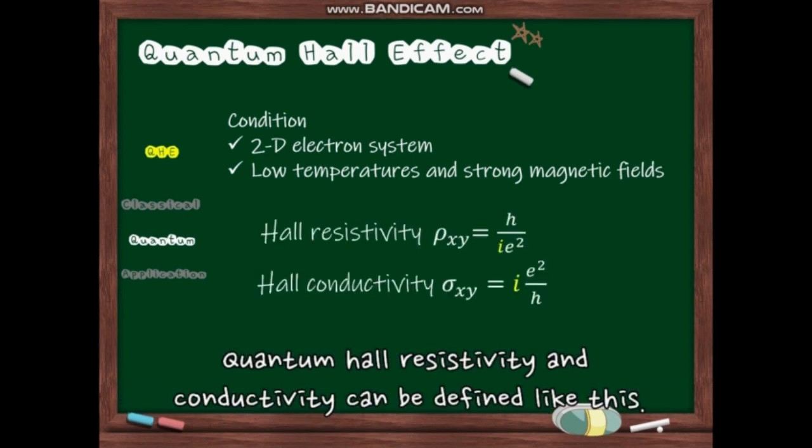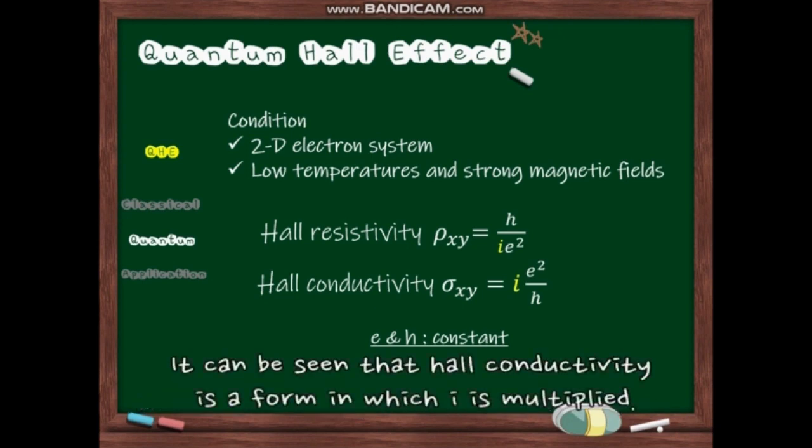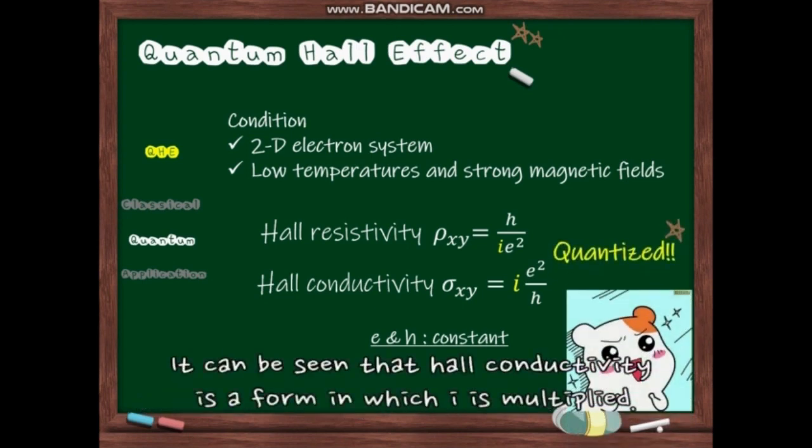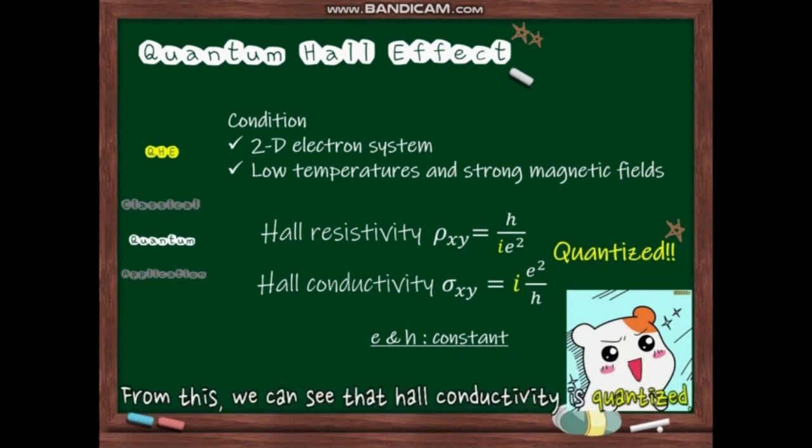Quantum Hall resistivity and conductivity can be defined like this. We know that the Planck constant H and electron charge E are constant values. It can be seen that Hall conductivity is a form in which I is multiplied. I can be integer or fraction. From this, we can see that Hall conductivity is quantized.